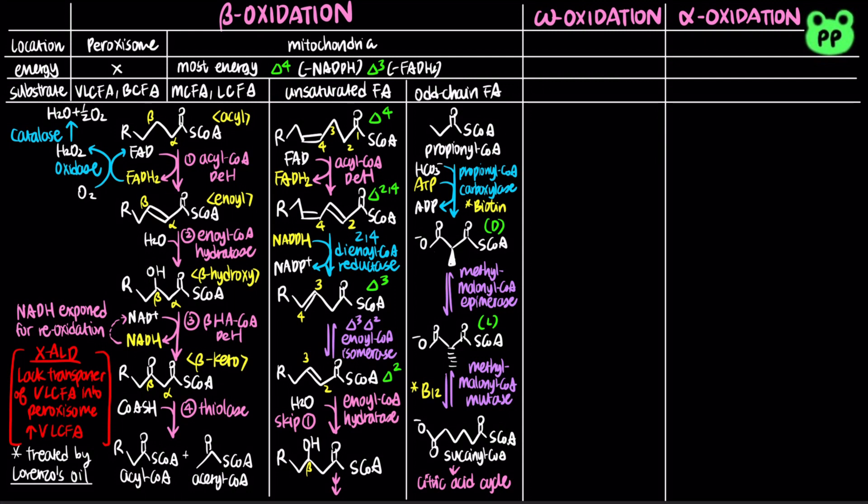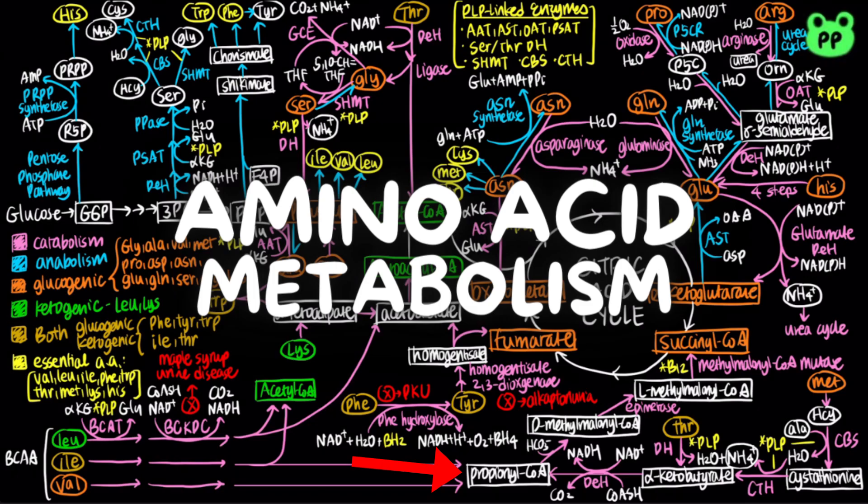Note that several amino acids, including isoleucine, phenylalanine, methionine, and threonine, are also degraded to propionyl-CoA, and follow the same pathway to enter the citric acid cycle. I've covered these pathways in my previous video titled Amino Acid Metabolism.